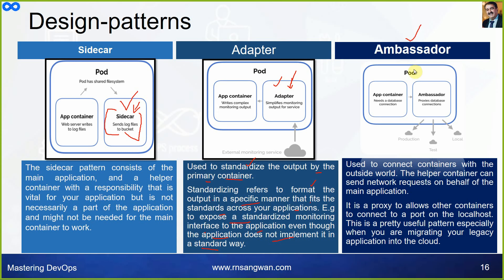Ambassador pattern: the app container needs a database connection. Different database connections are needed for different requirements — for example, different connections for production, test, and local environments. The ambassador container proxies these database connections. It is used to connect containers with the outside world — the helper container can send network requests on behalf of the main application. It acts as a proxy to allow other containers to connect to a port on localhost. This is a particularly useful pattern when migrating legacy applications into the cloud.